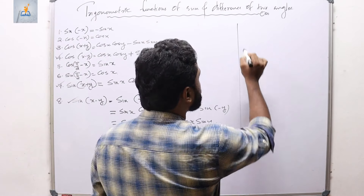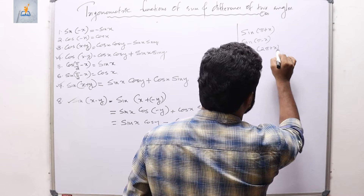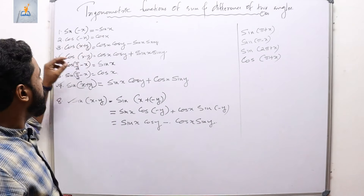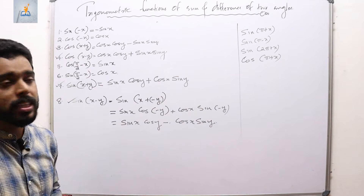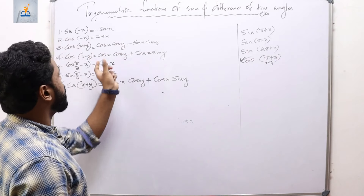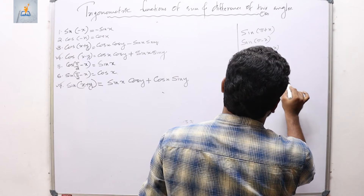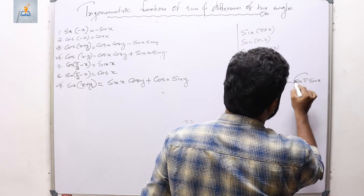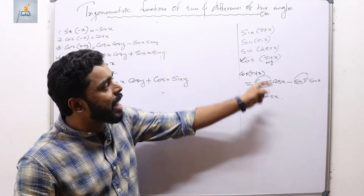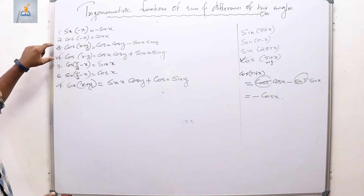You can use identities 3, 4, 7, and 8 to find values like sin(π+x), sin(π−x), sin(2π+x), or cos(π+x). For example, using identity 3: cos(π+x) = cos π·cos x − sin π·sin x. Since sin π = 0 and cos π = −1, the answer is −cos x. Just like this, you can find any sum or difference of trigonometric functions using one of these four formulas.